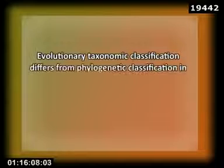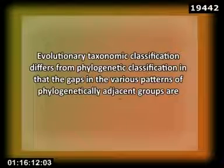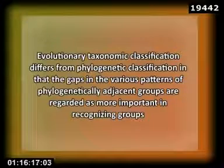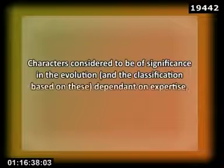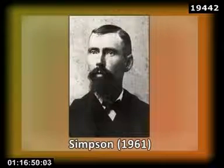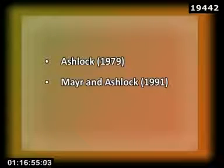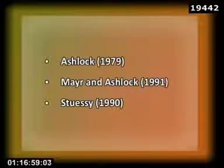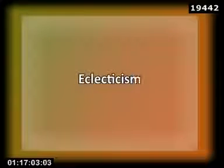4. Evolutionary taxonomy classification differs from phylogenetic classification in that the gaps in the various patterns of phylogenetically adjacent groups are regarded as more important in recognizing groups. It accepts leaving out certain descendants of a common ancestor, i.e., recognizing paraphyletic groups, if the gaps are not significant, thus failing to provide a true picture of the genealogical history. The characters considered to be of significance in evolution and the classifications based on these are dependent on the authority and intuition of systematists. Such classifications have been advocated by Simpson 1961, Ashlock 1979, Mayr and Ashlock 1991, and Stuessy 1990. This approach is known as eclecticism and is practiced by eclecticists.